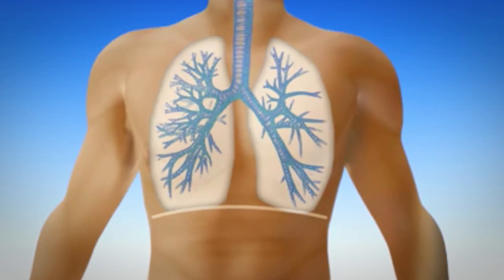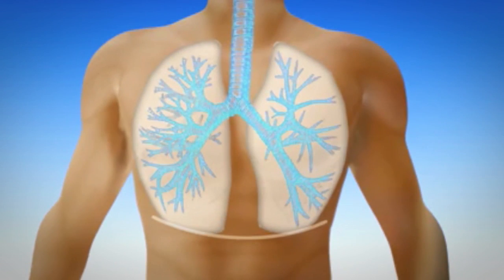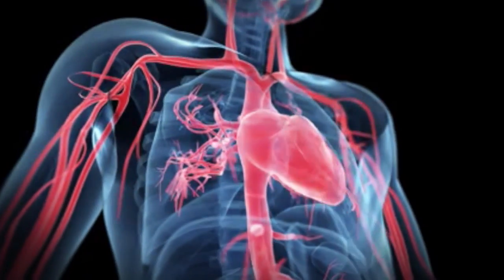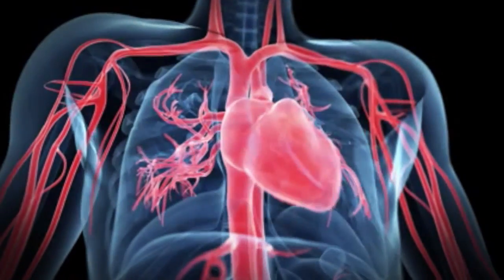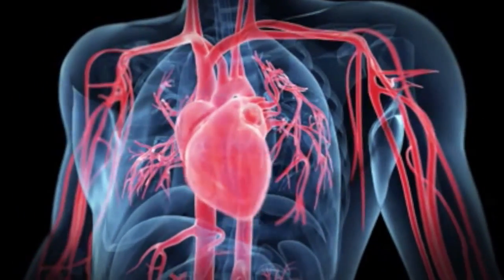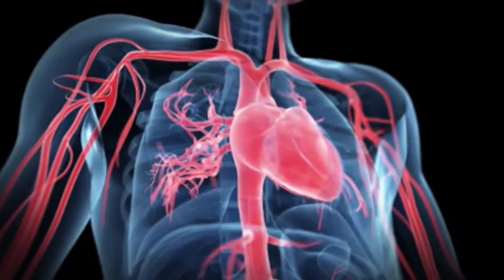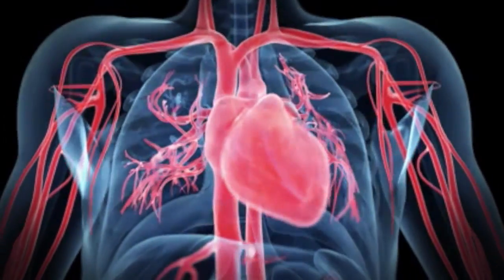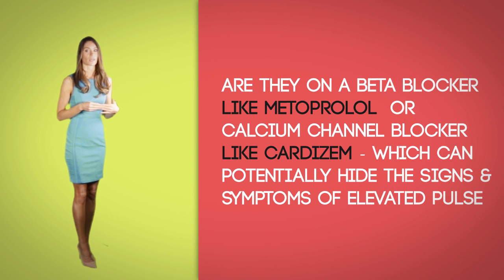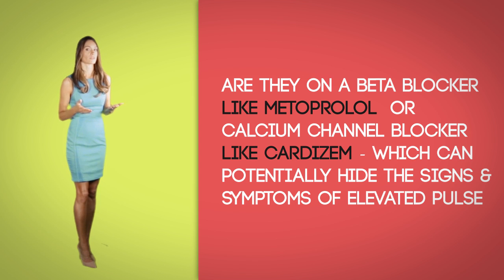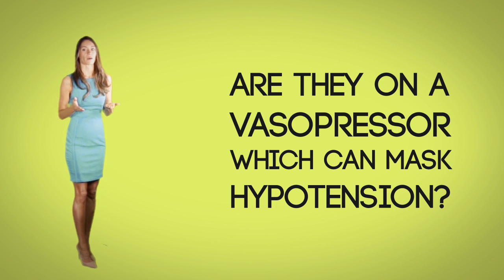Do they have an increased breathing rate greater than 20 respirations per minute? In sepsis, this is due to respiratory alkalosis. Cardiovascular: when you auscultate the heart, does it sound normal? When you check the upper and lower extremities, are they warm or cold to touch? How is the capillary refill? How is their blood pressure — is it less than 90 systolic? How is their pulse — is it greater than 90 beats per minute? Keep in mind medications the patient is taking. If they are on a beta blocker like metoprolol or calcium channel blocker like Cardizem, these medications can potentially hide signs of elevated pulse. Are they on a vasopressor, which can mask hypotension?